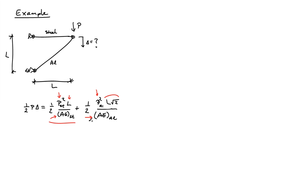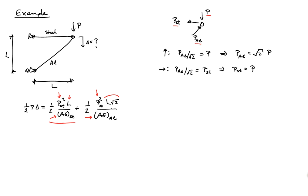The sum of the work stored in the two bars has to equal the work in the system. Now, if I draw a free body diagram of the node where the load is applied, I have the vertical load P, the horizontal load PST, and the load PAL at 45 degrees. Summing forces in the vertical and horizontal directions tells me that PAL is root 2P, and that PST is equal to P. So I can plug that back into my conservation of energy relationship.